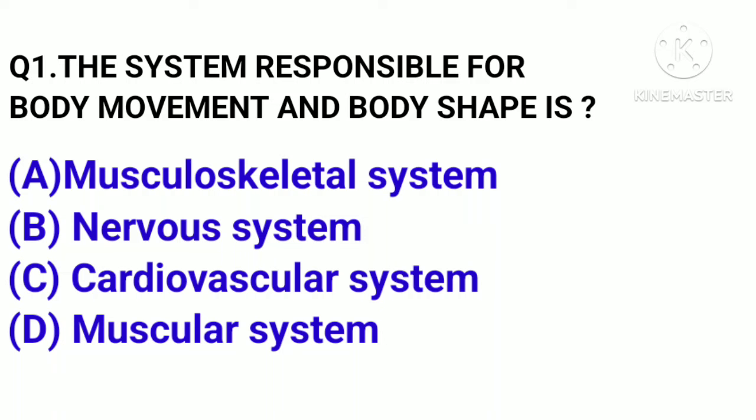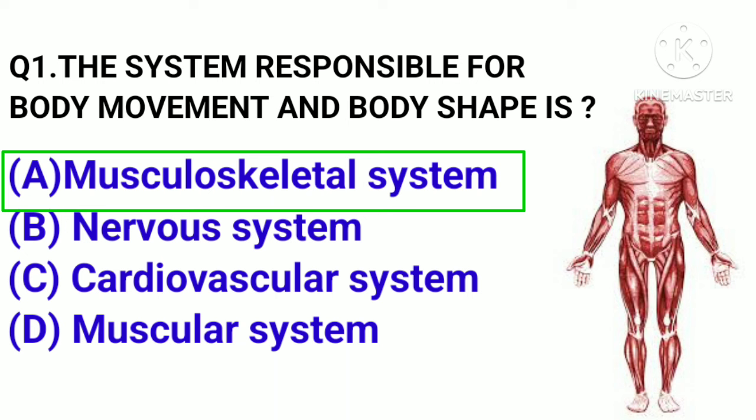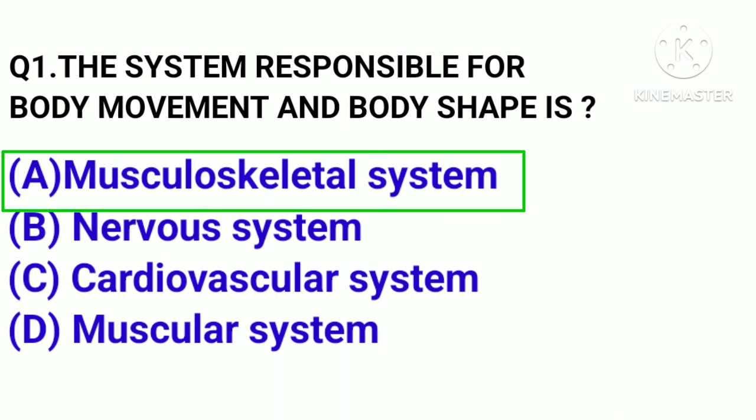Question number 1. The system responsible for body movement and body shape is: Option A, Musculoskeletal system. B, Nervous system. C, Cardiovascular system. D, Musculoskeletal system. Correct answer: Option A, Musculoskeletal system.